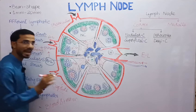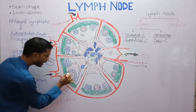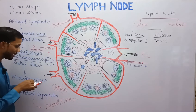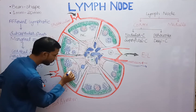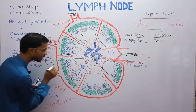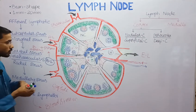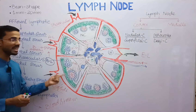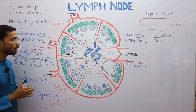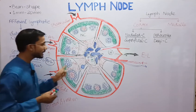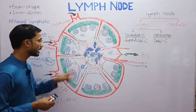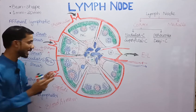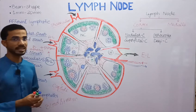Plasma cells and memory B cells come towards the center, while B lymphocytes remain at the periphery of the nodules. The primary nodule is the inactive form and the secondary nodule is the active form. In the paracortex region, T lymphocytes are present — the nodular cortex is the house of B cells and the paracortex is the house of T cells.